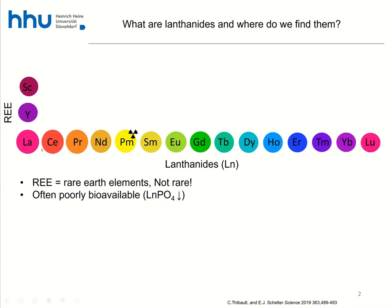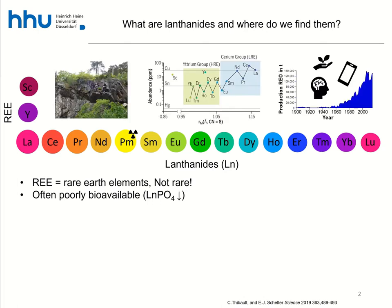The lanthanides are those elements usually placed at the bottom of the periodic table, which is a bit misleading because they're actually in the middle of it. When we talk about lanthanides, we mean the elements from lanthanum to lutetium. When we talk about rare earth elements, we also include scandium and yttrium. Despite the name, these elements are not rare at all — you can find them everywhere in nature, in your household, and in garden soil.